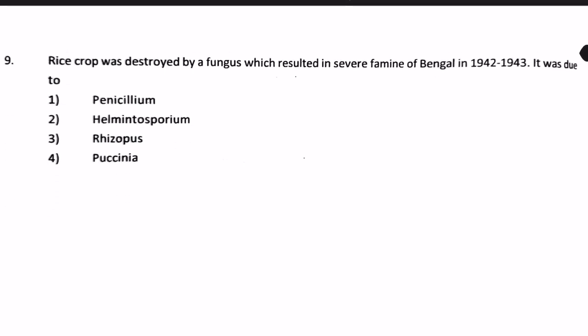Next question: A rice crop was destroyed by a fungus which resulted in the severe famine of Bengal in 1942 to 1943. The options are Penicillium, Helminthosporium, Rhizopus, and Puccinia. The famine of Bengal was caused by a fungus on rice crop — the answer is Helminthosporium oryzae, which caused the Bengal famine.